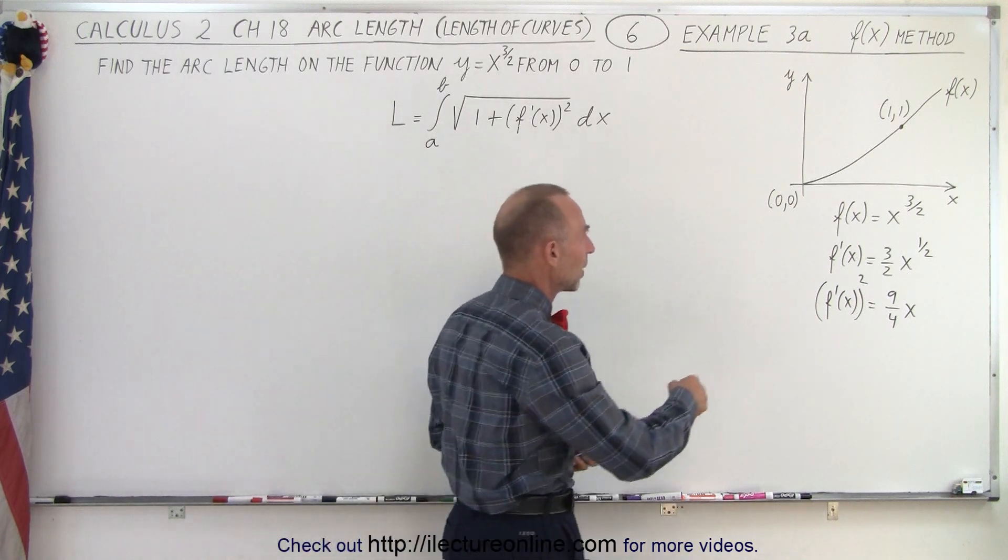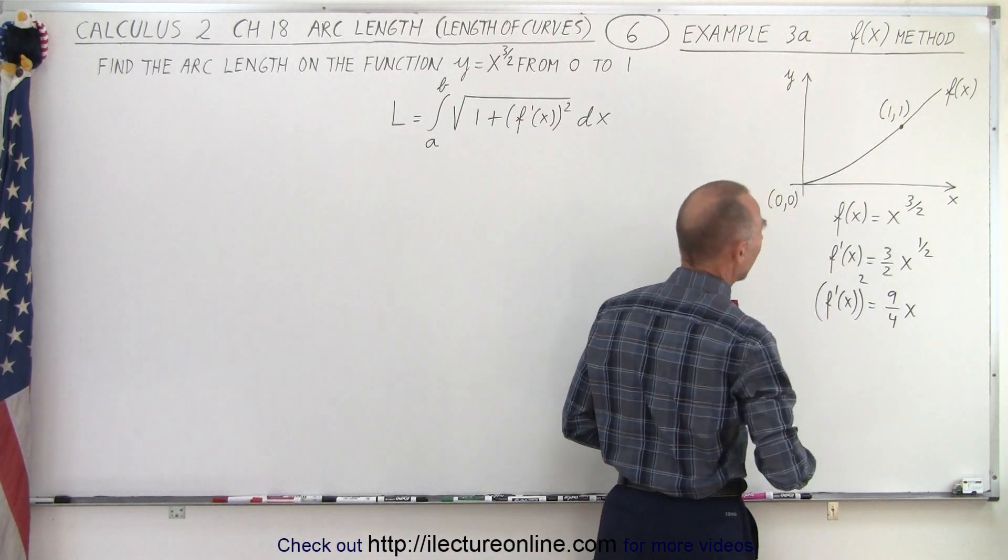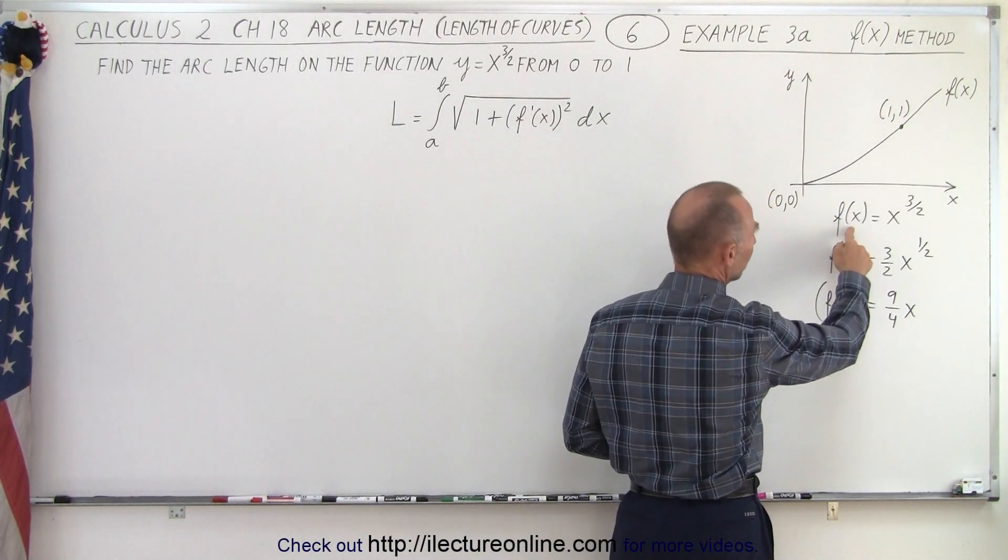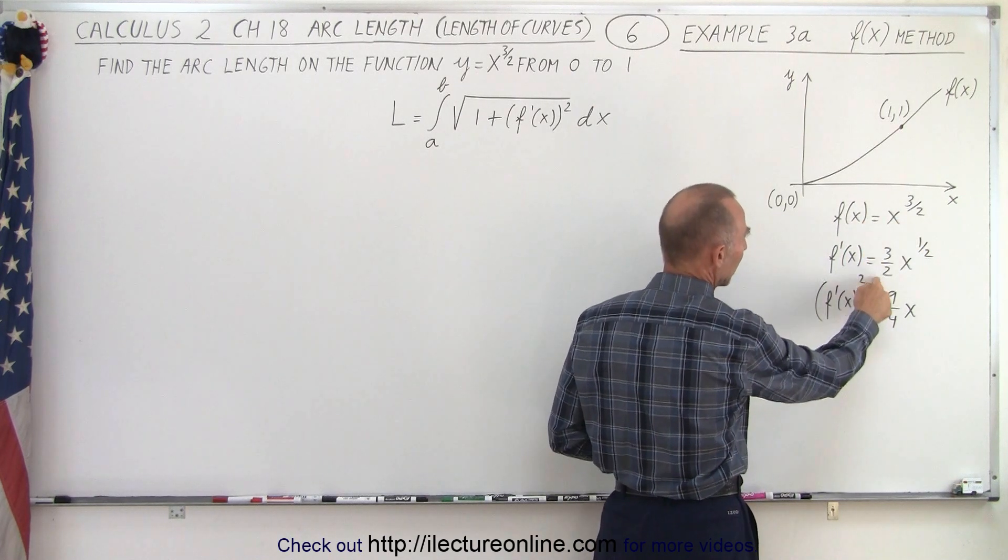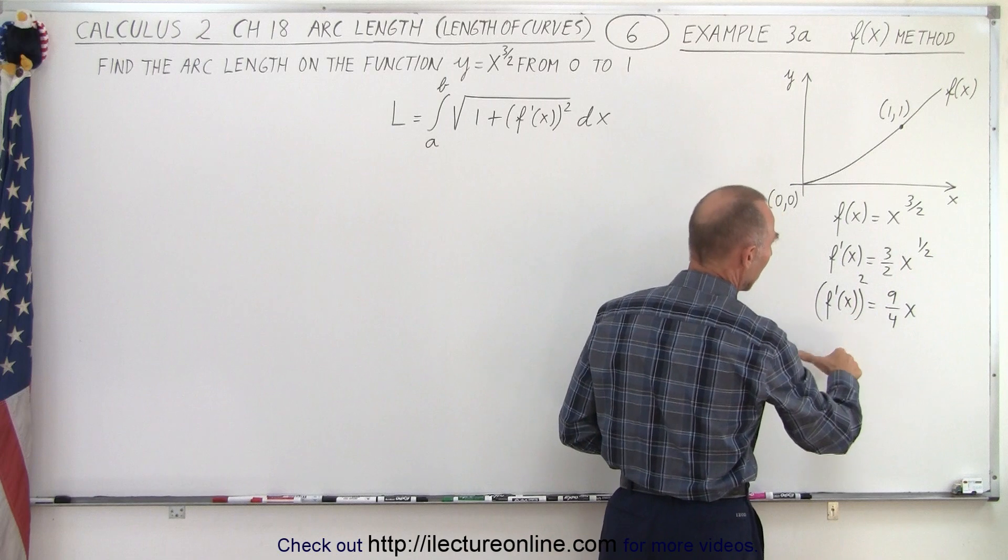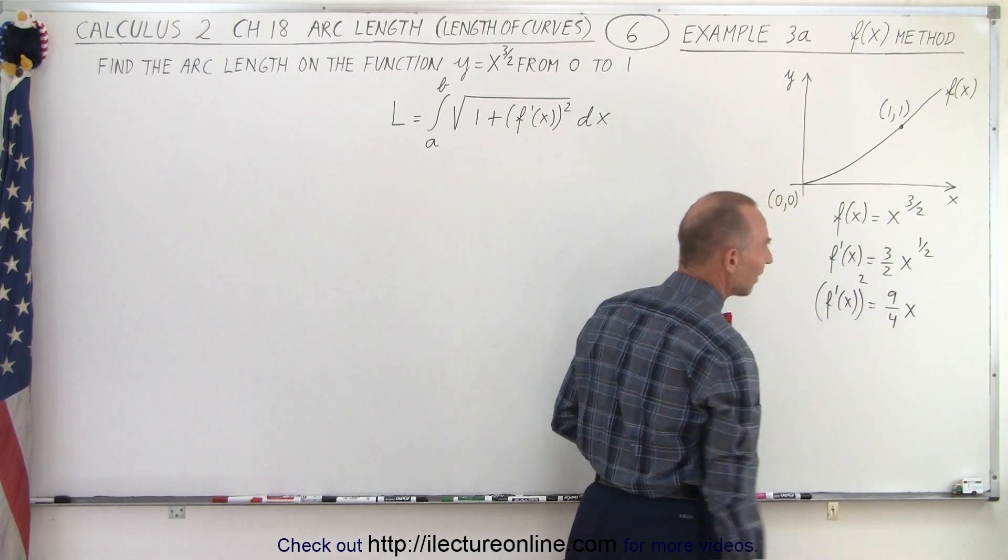So here is the graphical representation of the function and notice if the function is written as f of x equals x to the three halves, the derivative would be three halves x to the one half and when we square that we get nine fourths x.